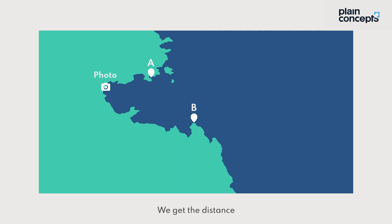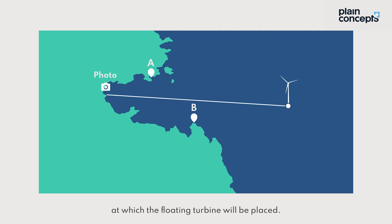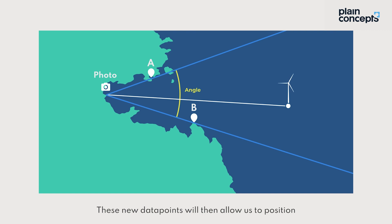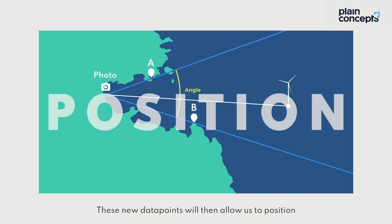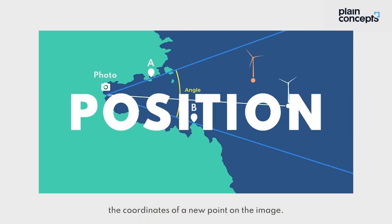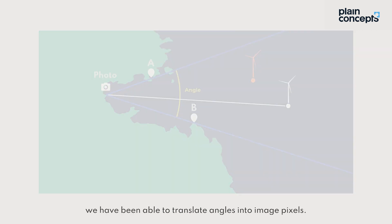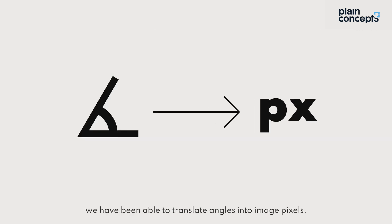We get the distance at which the floating turbine will be placed. We obtain the angle from which the floating turbine will be seen. These new data points then allow us to position the coordinates of a new point on the image. At this stage of the process, we have been able to translate angles into image pixels.